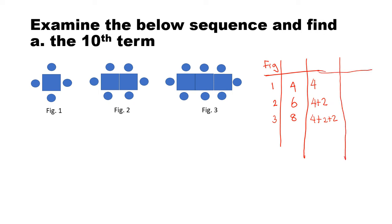Another way of looking at it is, I can say this is 2 plus 2, this is 2 plus 2 plus 2 and this is 2 plus 2 plus 2 plus 2. So that is another way of looking at it.